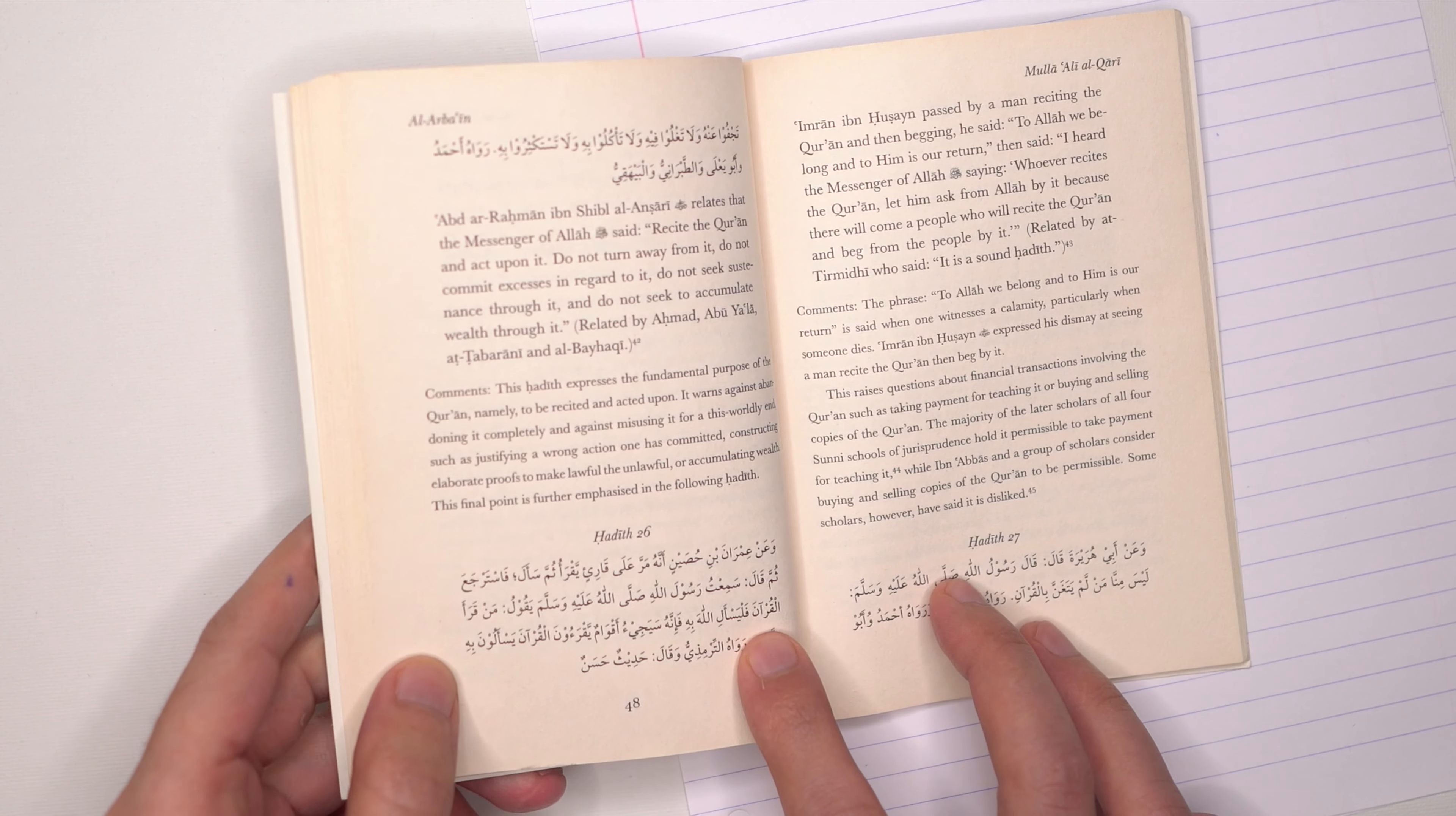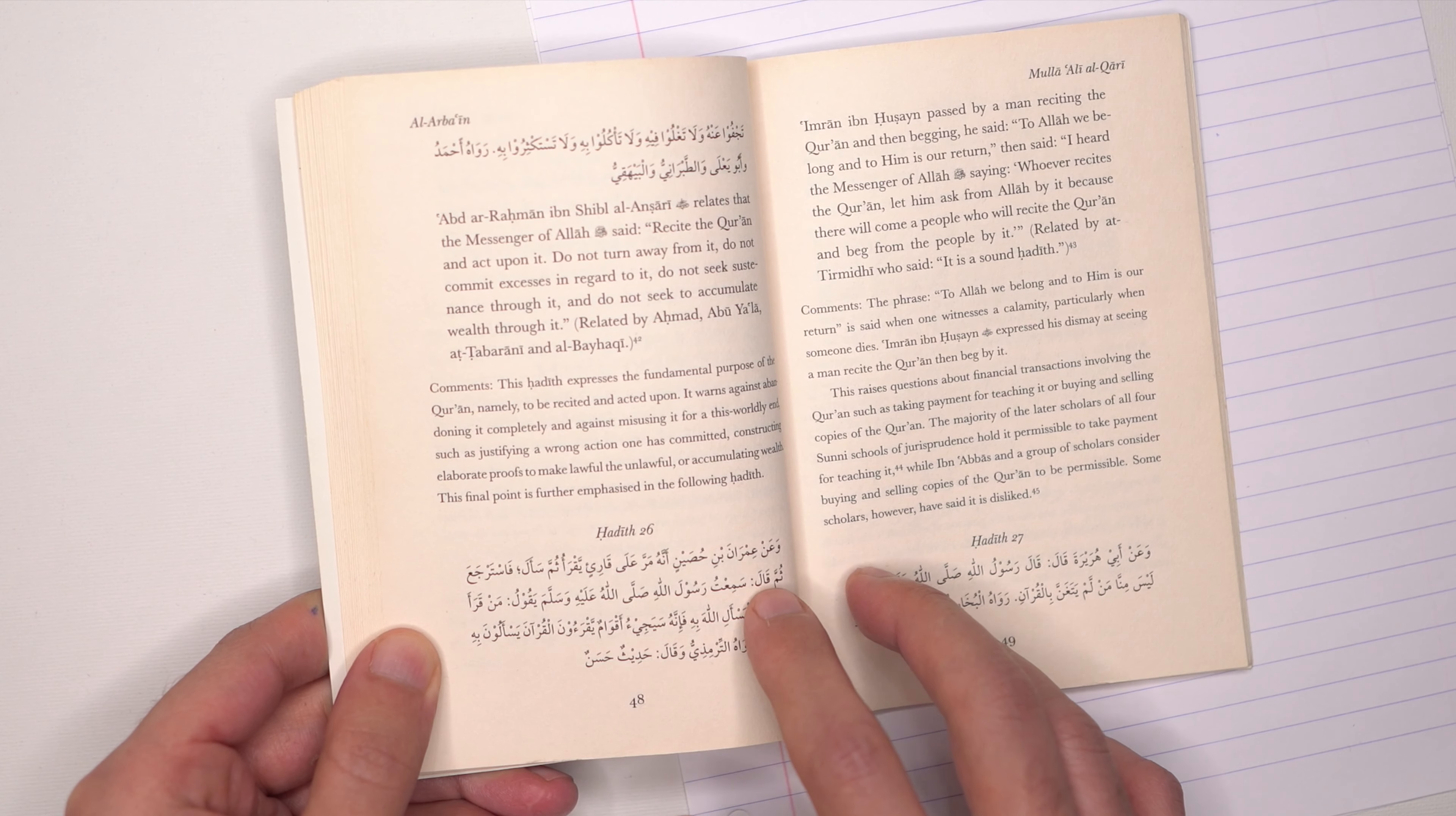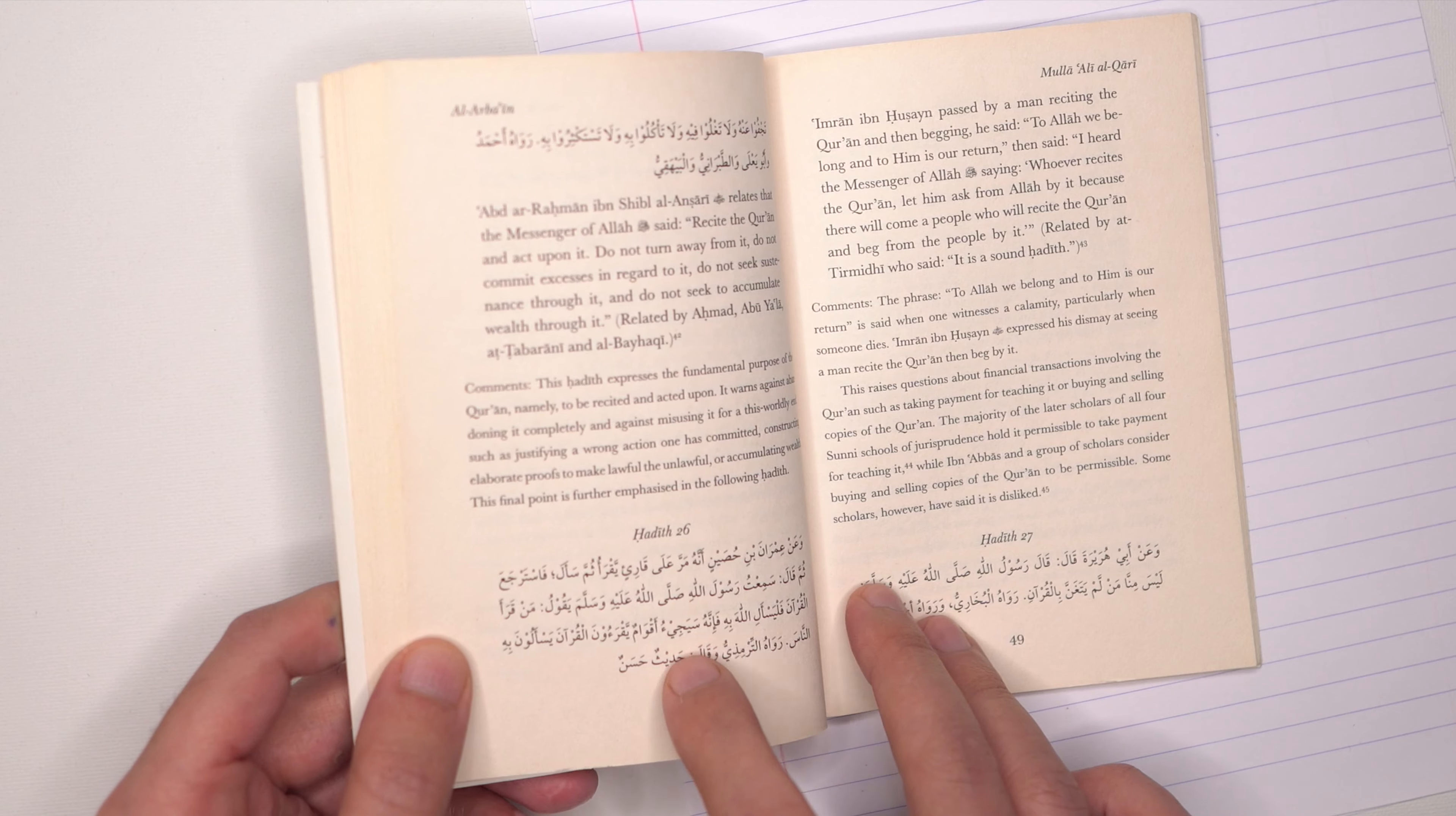Wa'an Imran ibn Hussain radiyallahu anhu annahu marra ala qari'in yaqra'u thumma s'ala fa'istarja'a thumma qal sami'tu Rasulullah sallallahu alayhi wa sallam yaqool man qara'a al-Qur'ana fal yas'alillah bihi. Fa'innahu sayaji'u aqwamun yaqra'oon al-Qur'ana yas'aluna bihi annaas. Rawah al-Tirmidhi wa qala hadith hassan.